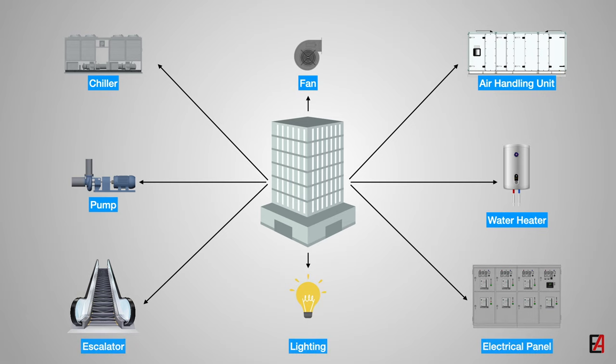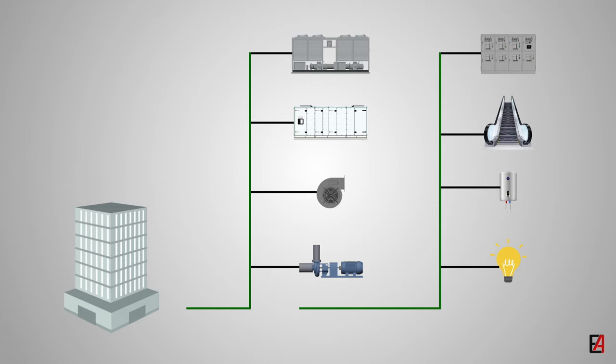Electrical equipment such as escalators, lighting, electrical panels, etc. These equipment will work standalone without any coordinated functionality. For example, to provide comfort in the building, the chiller should be delivering temperature at a certain degree Celsius. Without a coordinated system, it is very difficult to manage all the equipment manually. This is where the BMS comes into action.